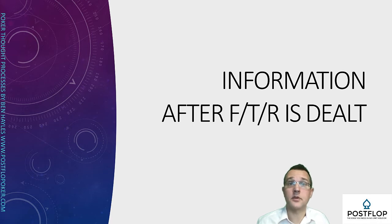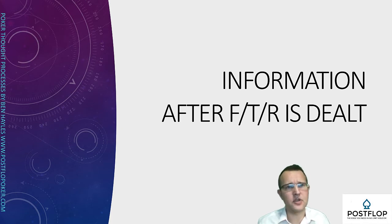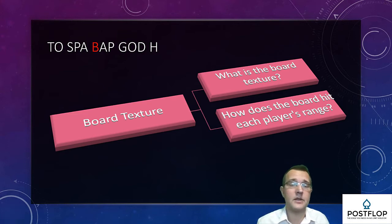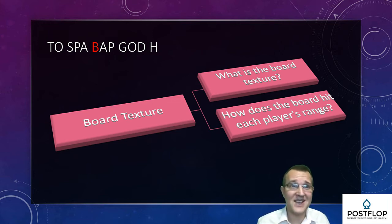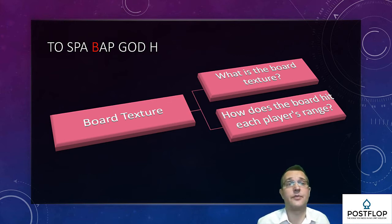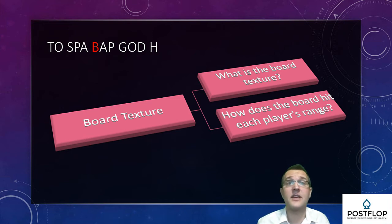Moving on to the BAPGodH elements — you'll notice this is almost identical to the AppGodH you learned preflop. There's just one extra factor: board texture. B is for board texture. As soon as the community card or cards are dealt, spend some time considering the texture of the board and how each player's range connects with it. The two sub-questions are: what's the board texture, and how does the board hit each player's range? Most players know they should be asking these questions yet still fail to ask them in each hand. To fix this, do the questioning drills and form the right habit.